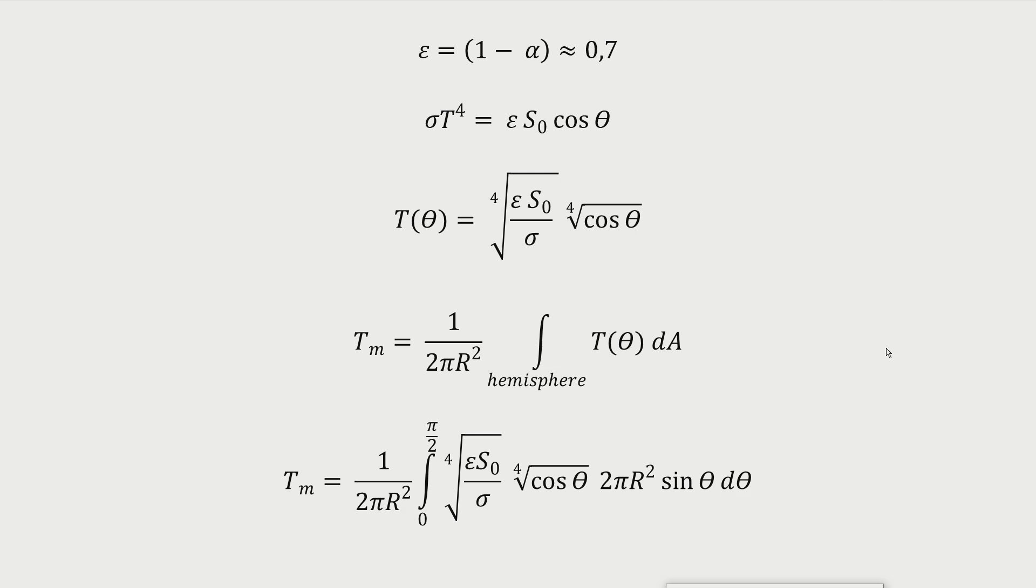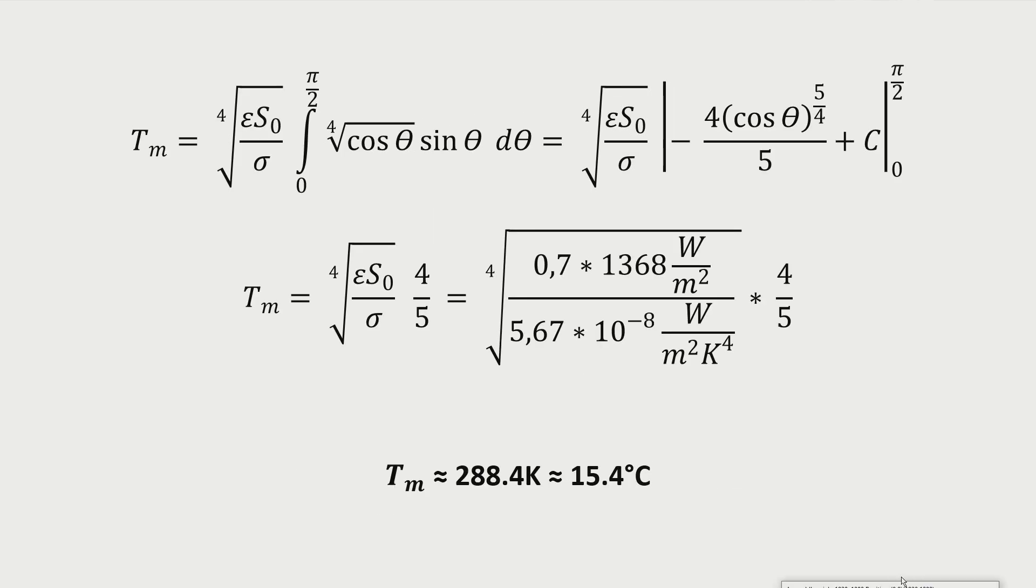Then the area averaged mean temperature of the sunlit hemisphere, Tm, is calculated by forming the area integral of the surface temperature distribution function, T of theta, over the sunlit hemisphere, and then dividing by the area of the hemisphere.